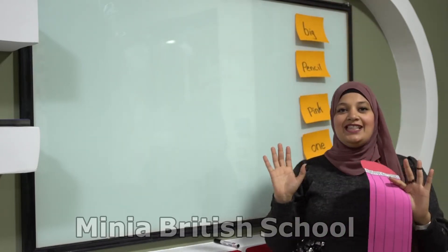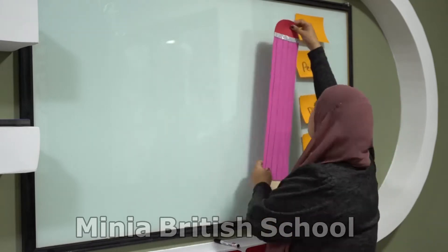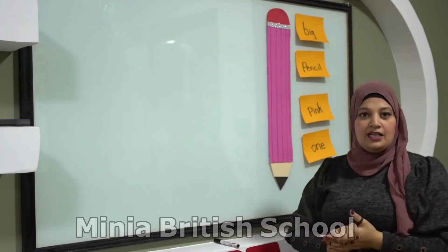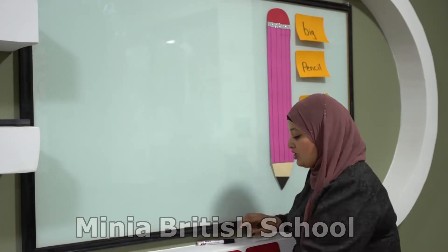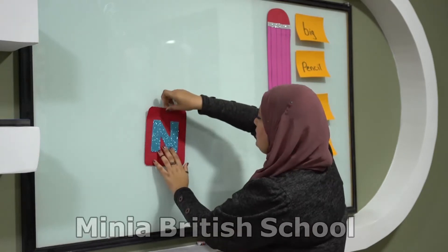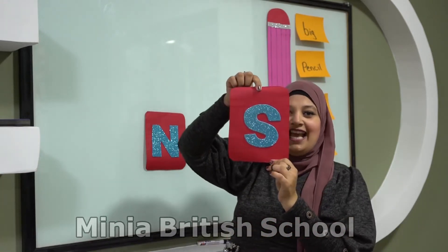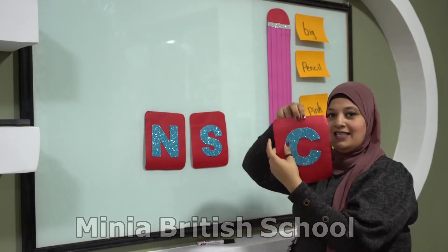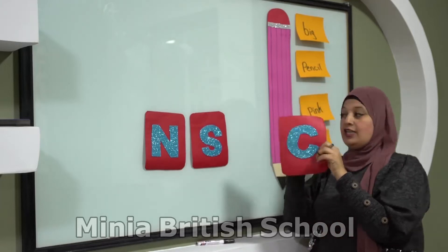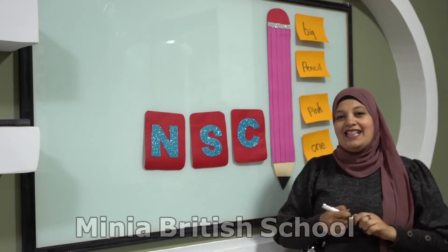I need to make a sentence using these words. How am I going to make a sentence to describe this pencil? To describe this big pencil. Let's see — number one, I have magic words. My magic letters are N, S, and C. So when I start describing something, I have to remember to use N, S, C. What are N, S, C?